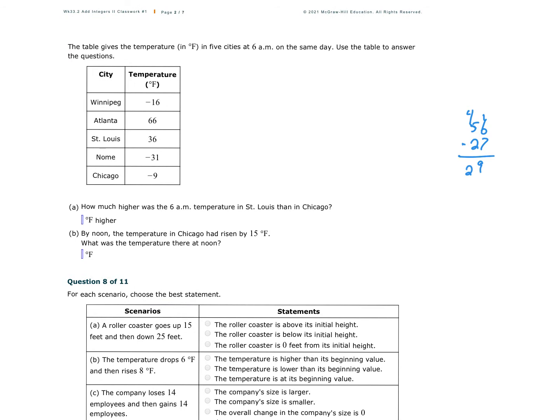The table gives the temperature in degrees Fahrenheit in 5 cities at 6 a.m. on the same day. Use the table to answer the questions. So Winnipeg's negative 16 degrees, Atlanta 66, St. Louis 36, Nome, which is in Alaska, negative 31, Chicago negative 9. It's cold, people. So which is the hottest? Well, Atlanta for sure. It's the biggest positive. Which is the coldest? Well, negative 31 is super cold.